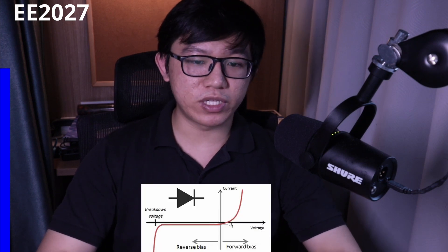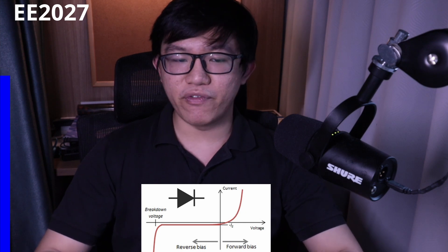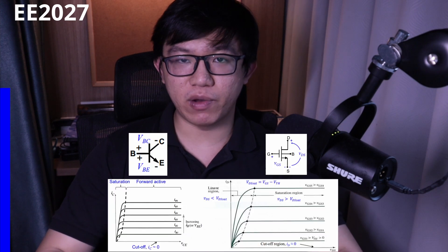For diodes, we went through the operating properties, AC and DC, forward and reverse biasing, and rectifier circuits. BJTs and MOSFETs were very similar, and we went through their modes of operation, DC and AC analysis, and their equivalent models in DC and AC. We also covered early effects for BJTs, channel length modulation, and body effects for MOSFETs, and a use case for MOSFETs as CMOS inverters.